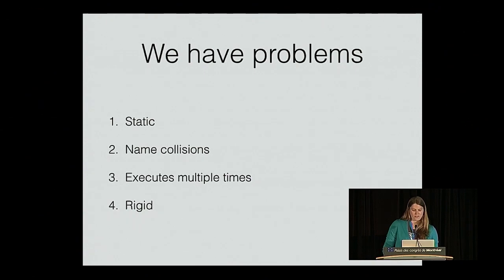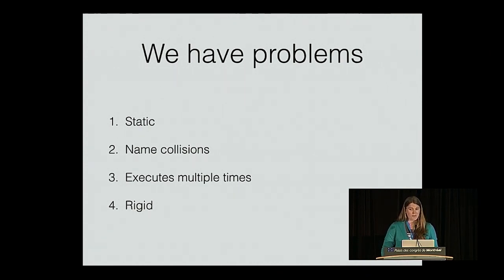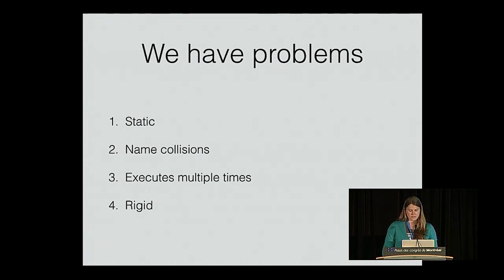There are still lots of problems with this solution, and we'll look at four of them over the next 20 or so minutes. For one thing, this is static — we can't change the behavior while the program is running. For another, we have name collisions — if we have two things with the same name, we can't tell that that'll happen. We're executing our files multiple times, which may be inefficient but has a more serious problem of object identity. And it's very rigid — there's currently only one way to do this.